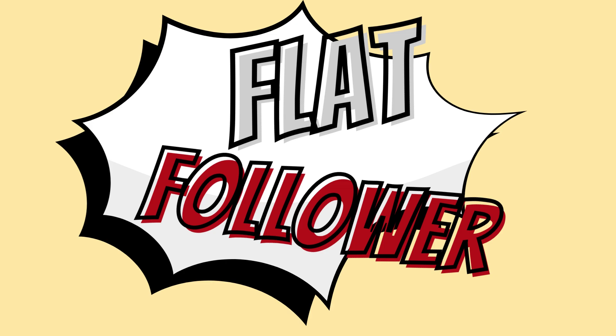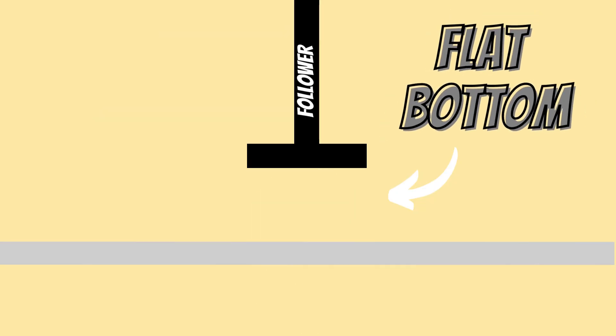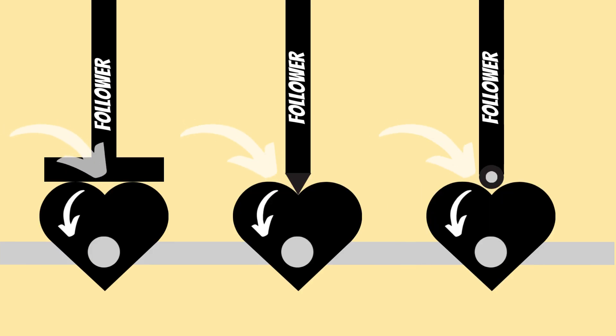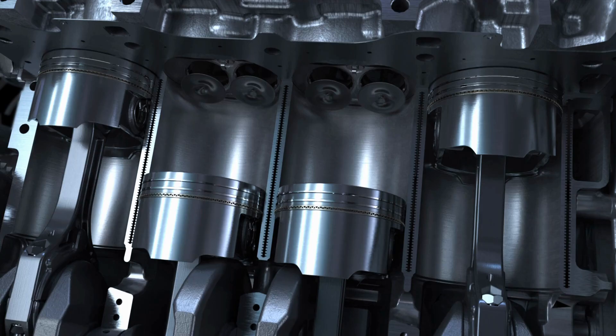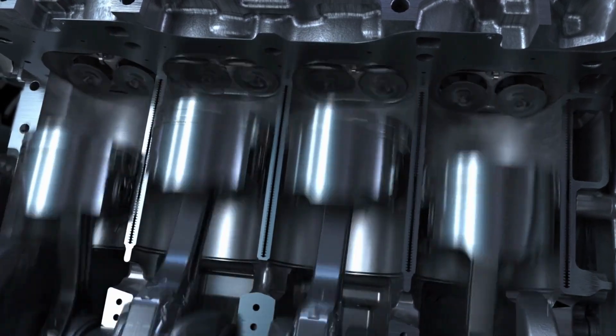Let's briefly cover the different followers. We've learned the purpose of the cam and how it directs the follower to move up and down. There are three types of followers that you need to know. First, the flat follower — a flat button that sits on the cam. These cope well under load but aren't very accurate as they cannot follow the profile of the cam well and don't cope well with friction. They are mainly used within car engine valves.